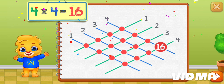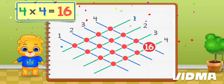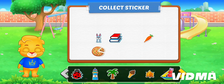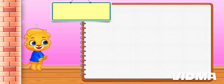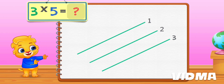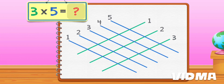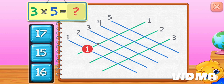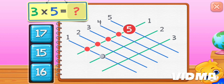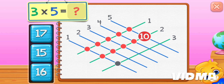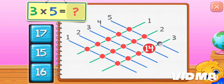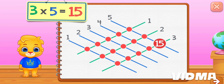Pick a sticker. Three times five equals — one, two, three, four, five, six, seven, eight, nine, ten, eleven, twelve, thirteen, fourteen, fifteen. Three times five equals fifteen.